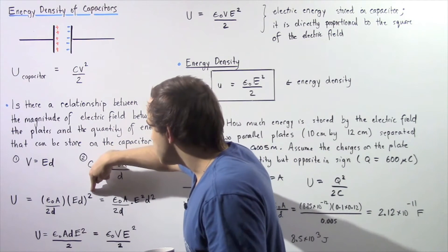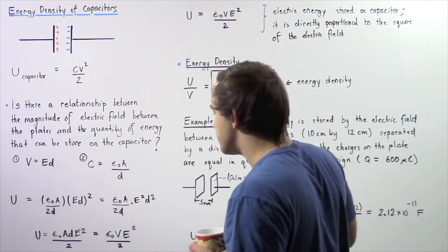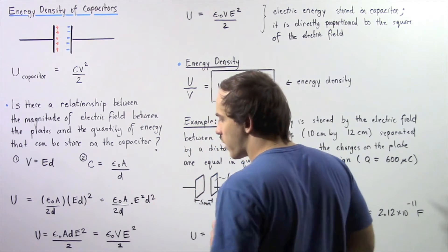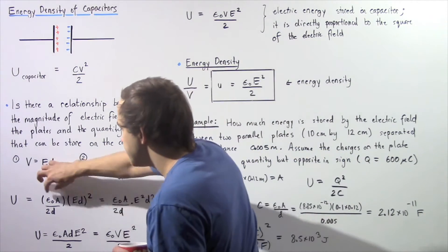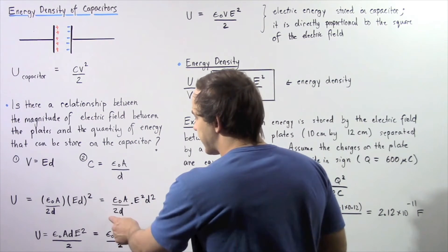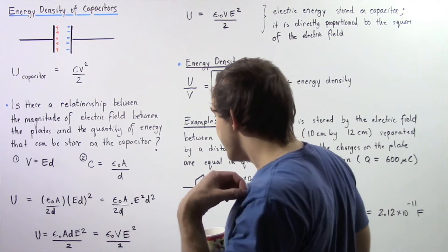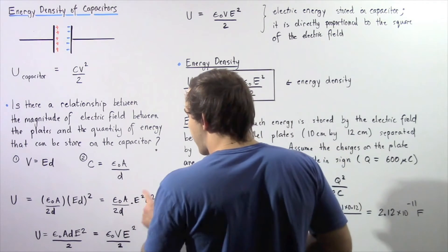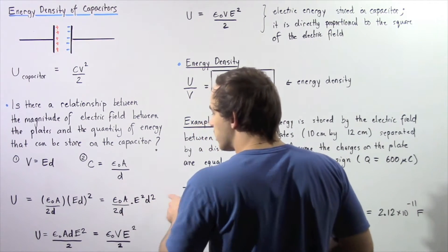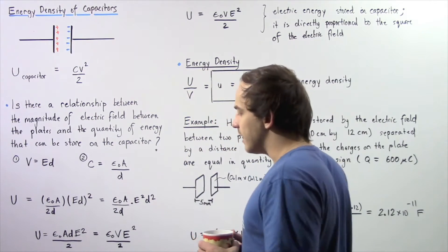Distributing this exponent, we have E squared multiplied by d squared. This becomes epsilon naught multiplied by A divided by 2d. Notice d appears on the bottom and d squared on top — we can cancel one of these out and we get the following result.